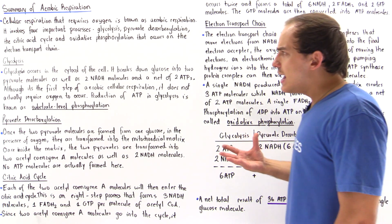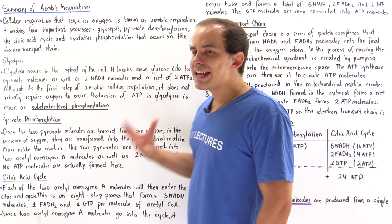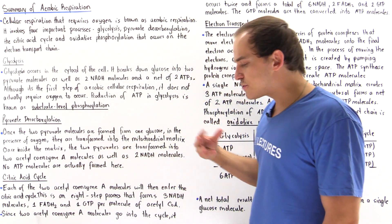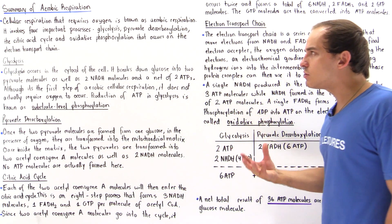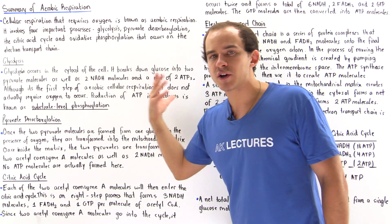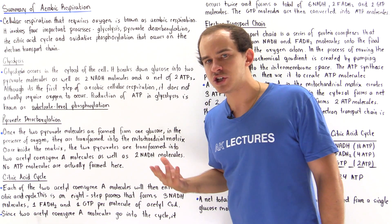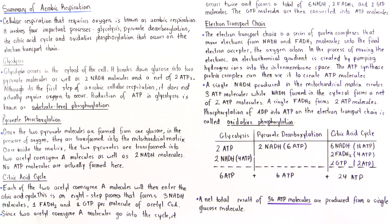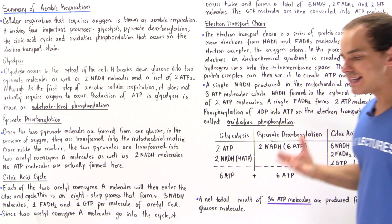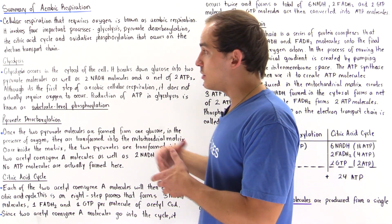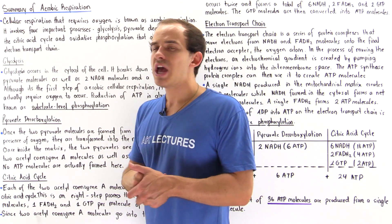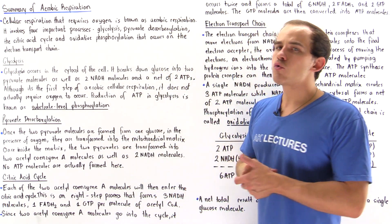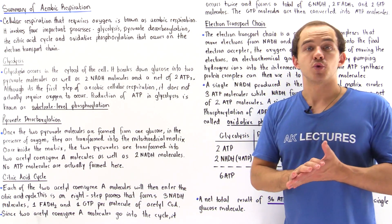When a single glucose molecule is broken down in aerobic respiration, the net result is 36 ATP molecules. This concludes our summary of aerobic respiration.